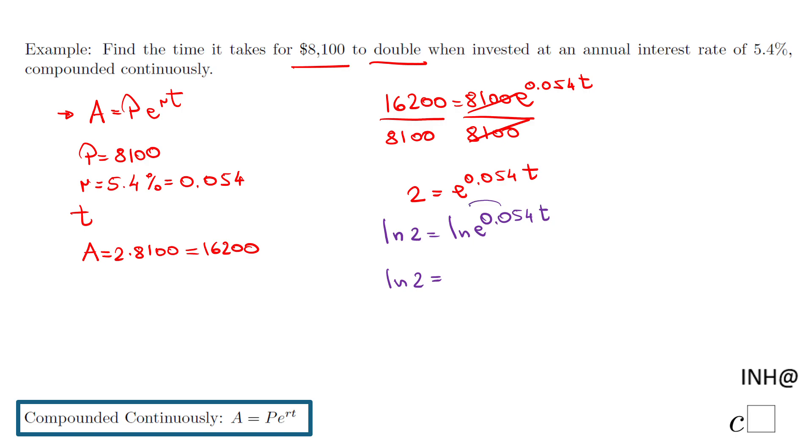Natural log of 2 stays, but then this exponent goes up front because of the rules of logs: 0.054t, and then I have natural log of e, which is nothing else than 1. So I can say simply natural log of 2 equals 0.054t, because this is 1, or you may say natural log and e cancel out.